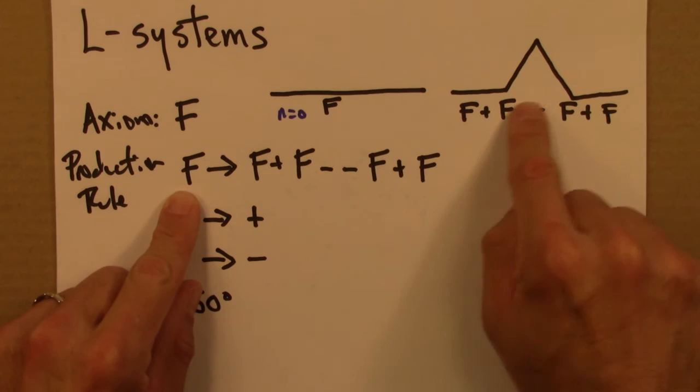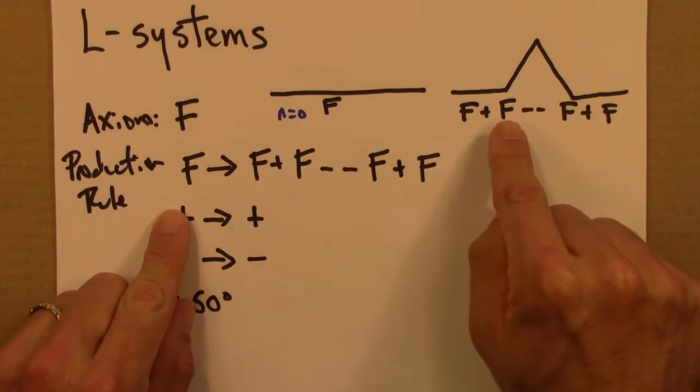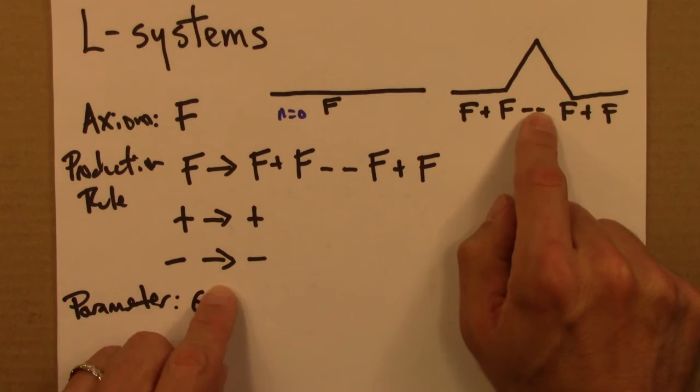I would take this sequence of symbols, F plus F. Every time I see an F, I would replace it with this long thing. Every time I see a plus, I would leave it alone. F gets replaced with this. Minus minus stays alone, is left alone, and so on.